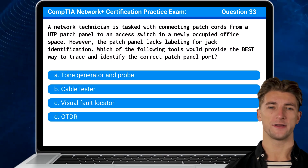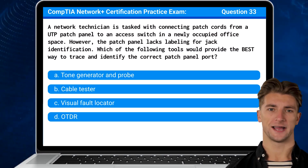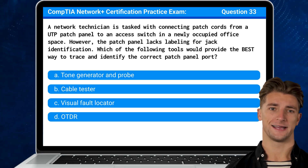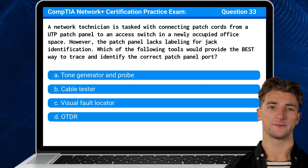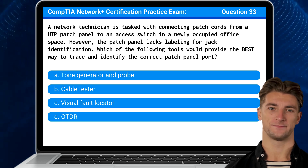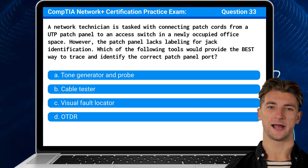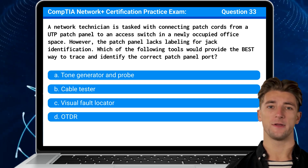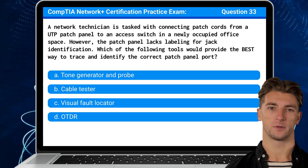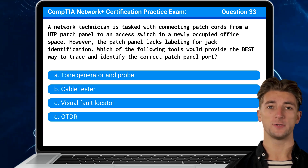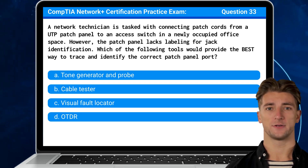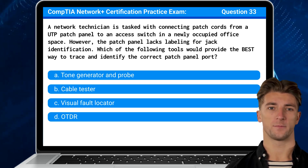Question 33: A network technician is tasked with connecting patch cords from a UTP patch panel to an access switch in a newly occupied office space. However, the patch panel lacks labeling for jack identification. Which of the following tools would provide the best way to trace and identify the correct patch panel port?